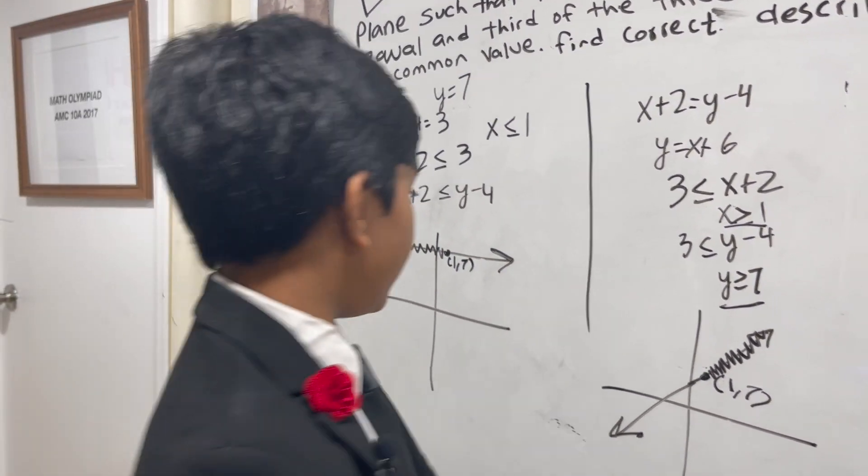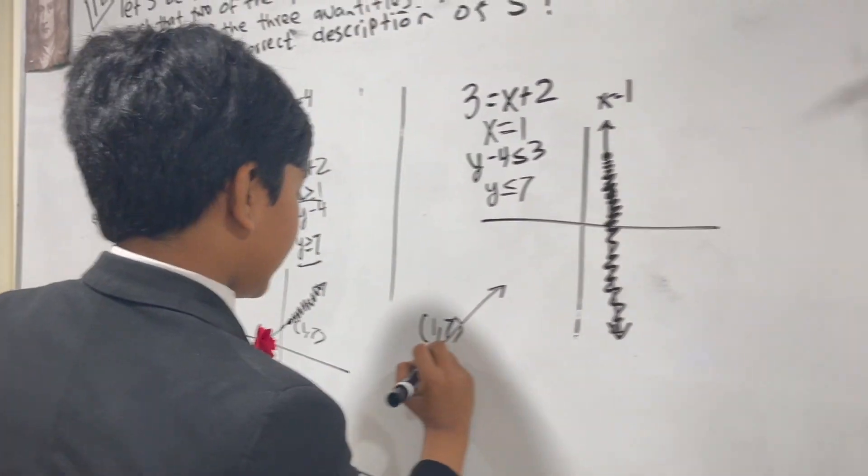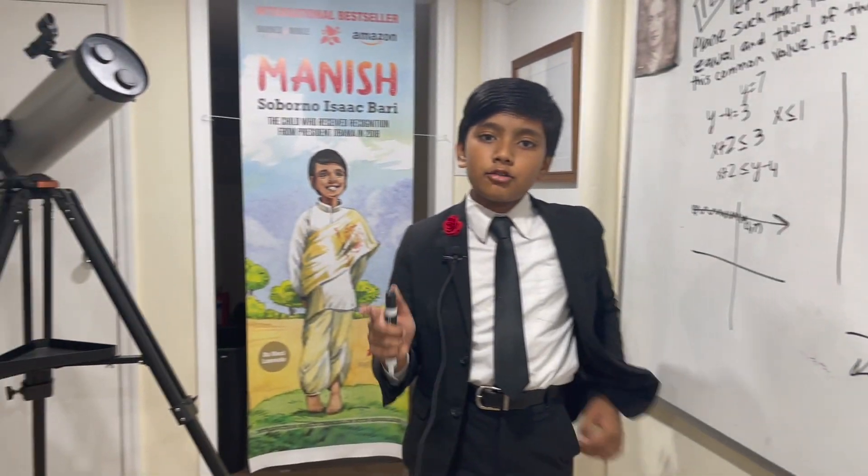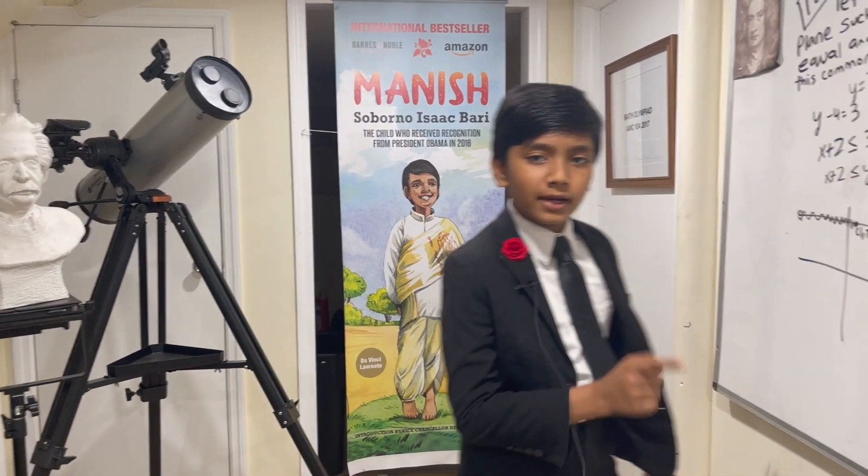So we finally found that the answer is 3 rays with the common endpoint 1 comma 7. Thank you everybody for watching, and we'll see you in the next one.